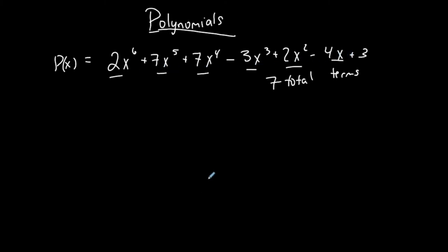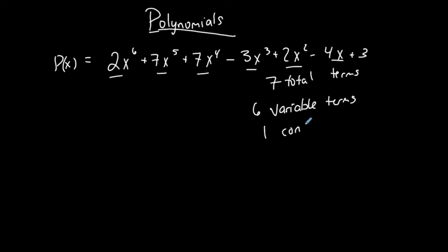Six of those terms contain variables — those are called variable terms. Only one of them does not contain a variable, so there is one constant term. A term that does not contain a variable is called a constant term.